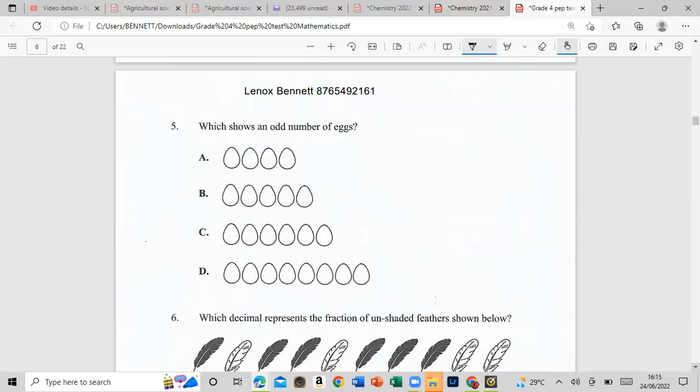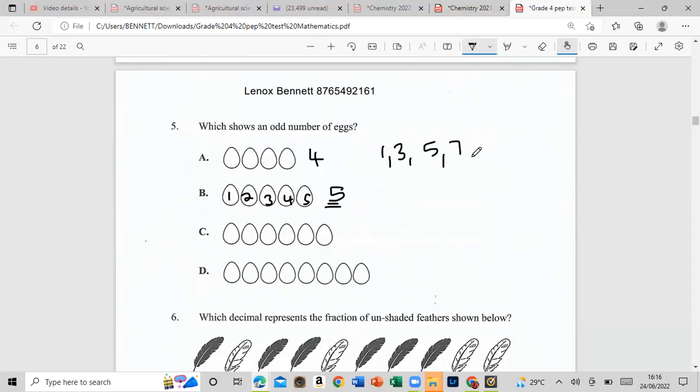Which shows an odd number of eggs? What's an odd number? Odd numbers cannot be divided by two, we will be left with a remainder. So odd numbers are like one, three, five, seven, nine, eleven, thirteen. Let's see, we have one, two, three, four, that's an even number. This one has five, which would be an odd number. So odd numbers are numbers like one, three, five, seven, nine, eleven, and thirteen.